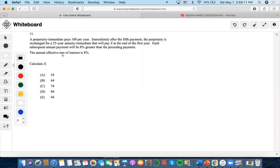Hi, so this is going to be the next question. It says that a perpetuity immediate pays $100 per year and that immediately after the fifth payment, the perpetuity is exchanged for a 25-year annuity immediate that will pay X at the end of the first year.